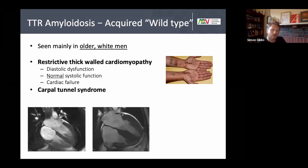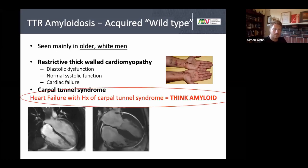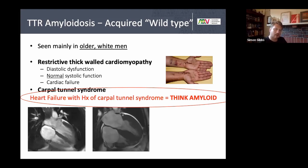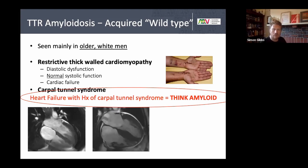About two thirds to three quarters of ATTR patients will have a preceding carpal tunnel syndrome, many of whom will have had surgical releases. So if you see anyone with heart failure and a history of carpal tunnel syndrome, always think of amyloidosis. When checking their pulse, look for carpal tunnel release scars — especially in older men over the age of 60, and if bilateral. If you have any suspicion, order a bone scan.